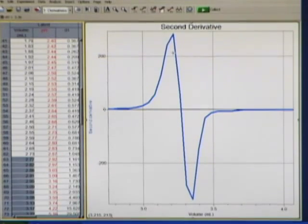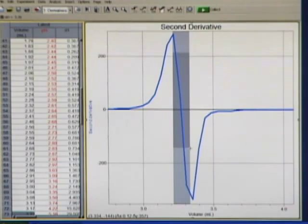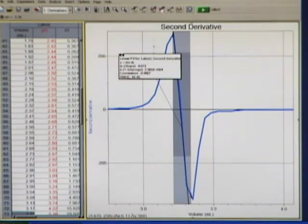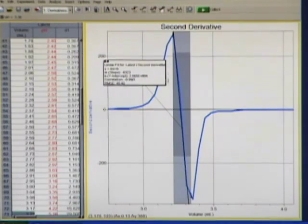If I select a region right about like that where it is a linear curve right along where it crosses zero, I can then click on the linear regression button on the toolbar. And it fits a line to that section.